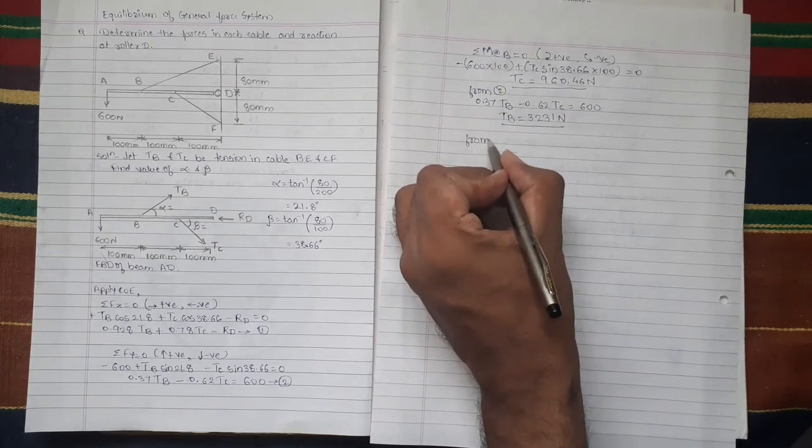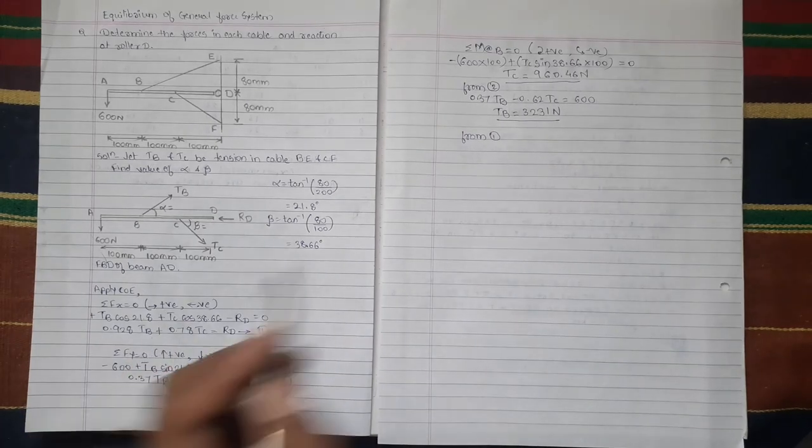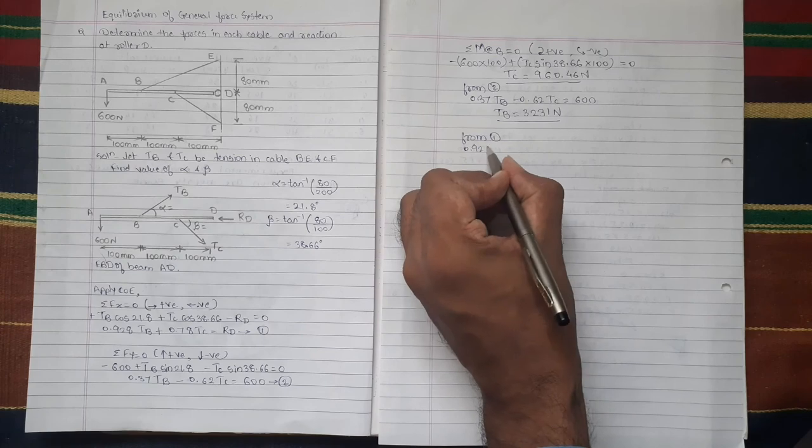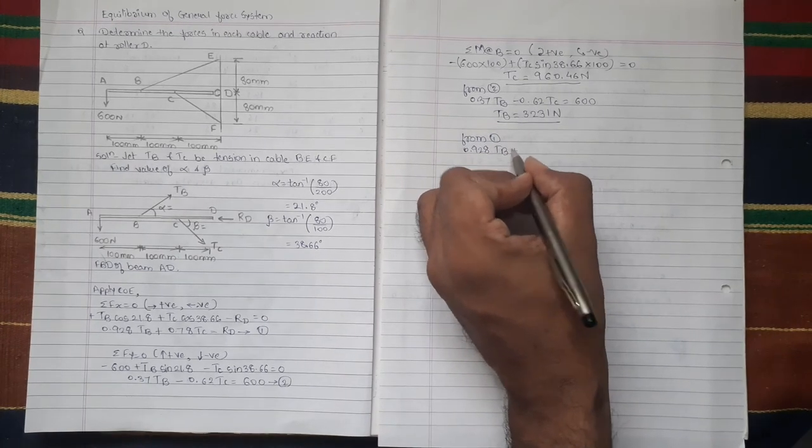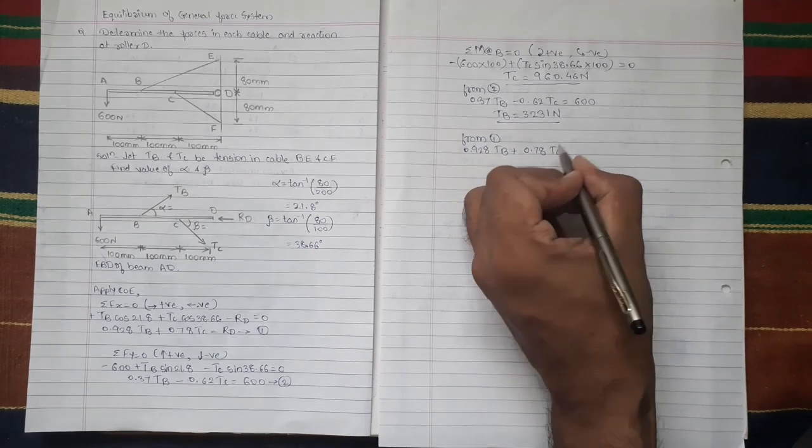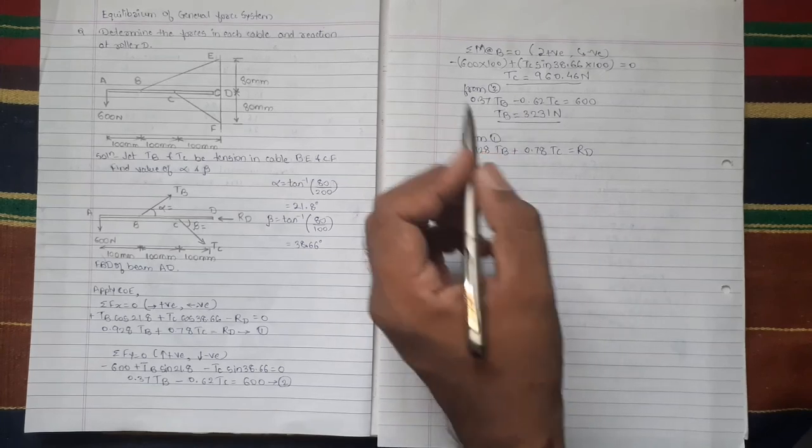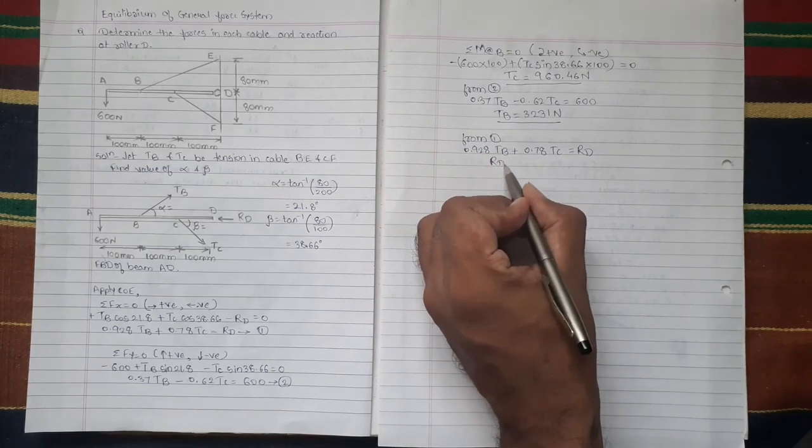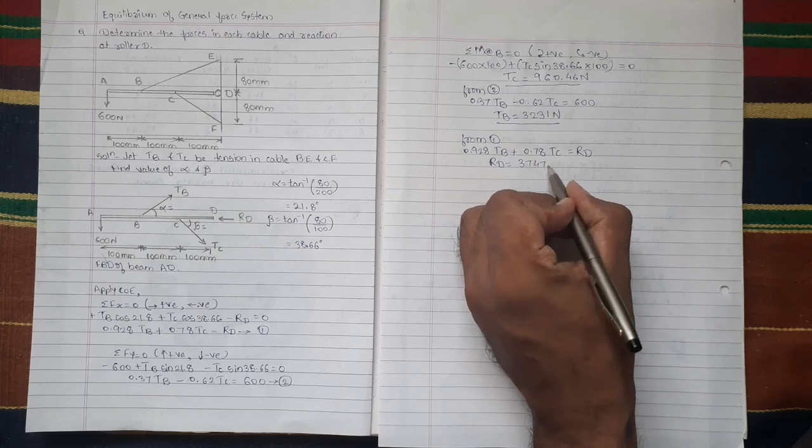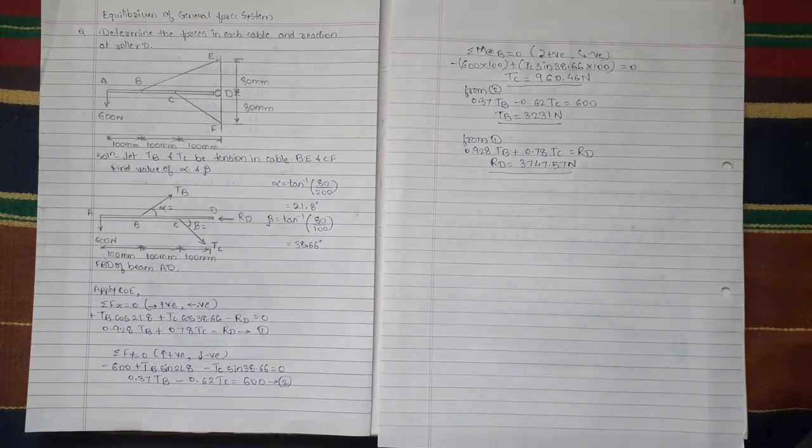From equation 1, we will put value of TB and TC to get value of reaction RD. 0.928 TB plus 0.78 TC equal to RD. We will put value of TC and TB to get value of RD, which comes equal to be 3747.57 Newton.